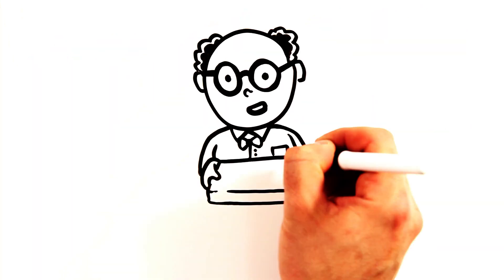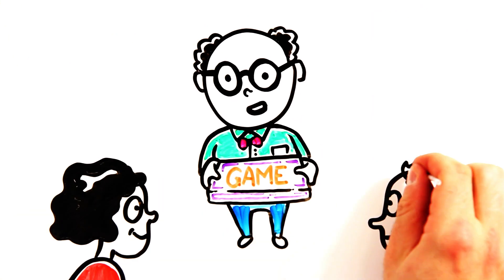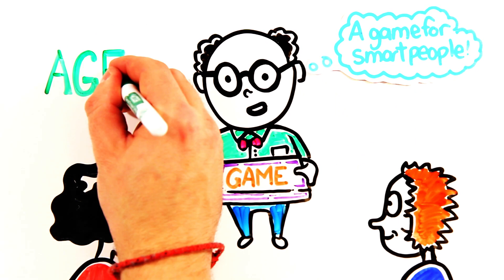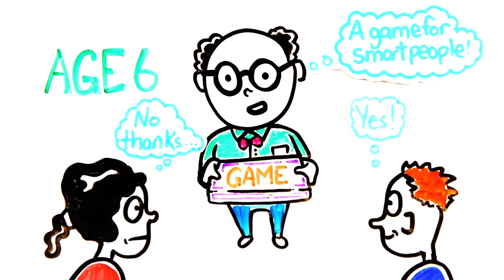In a similar experiment, kids were asked if they wanted to play a game for people who are really, really smart. And again, at age 5, both sexes wanted to play, but by age 6, girls had decided these games weren't for them.